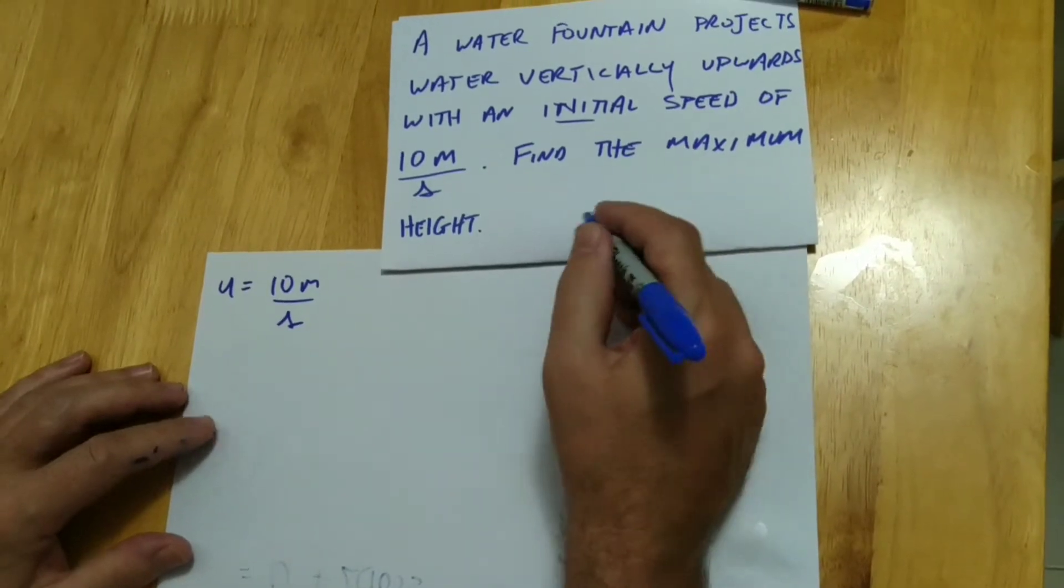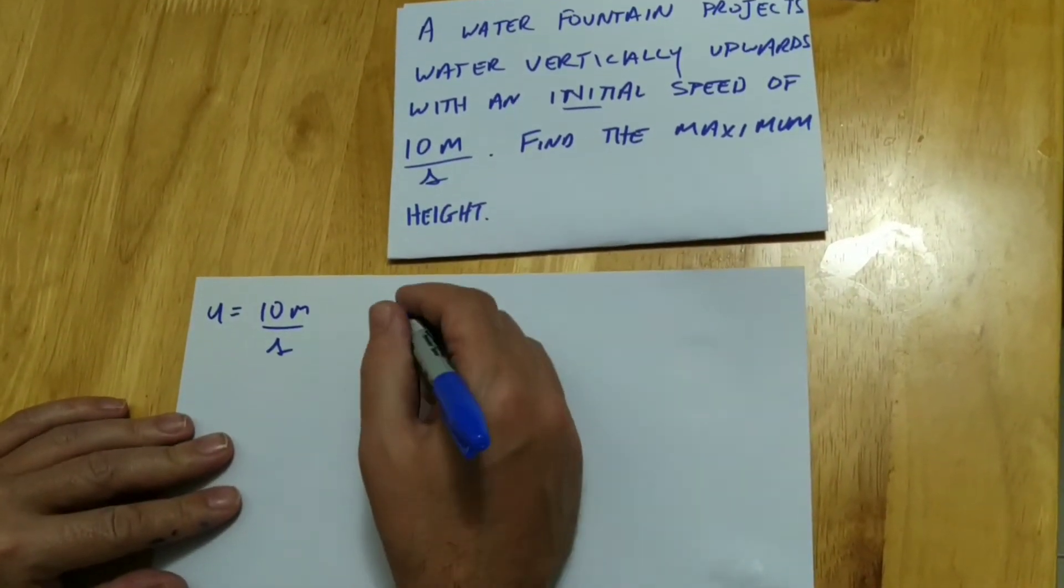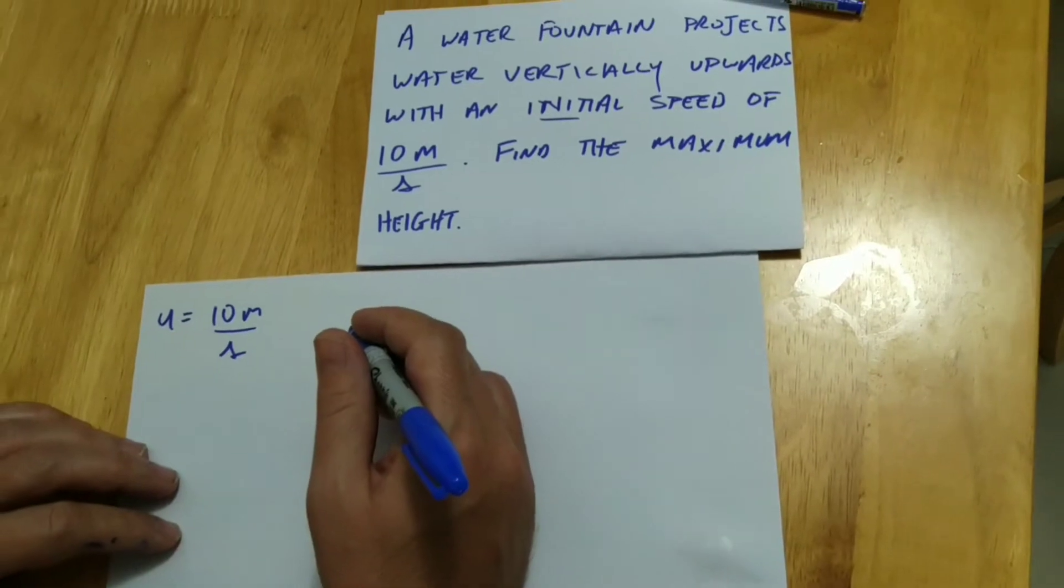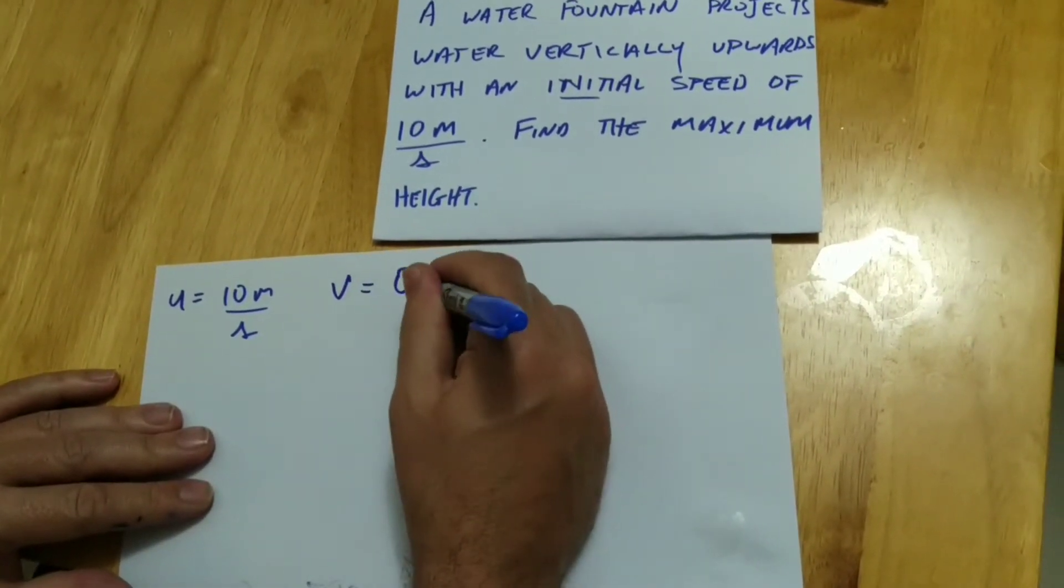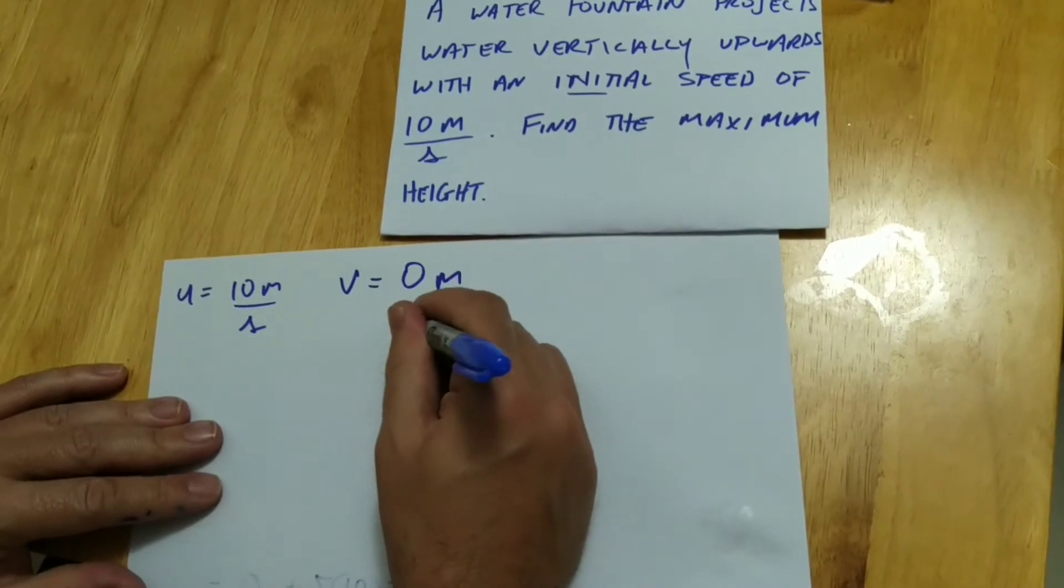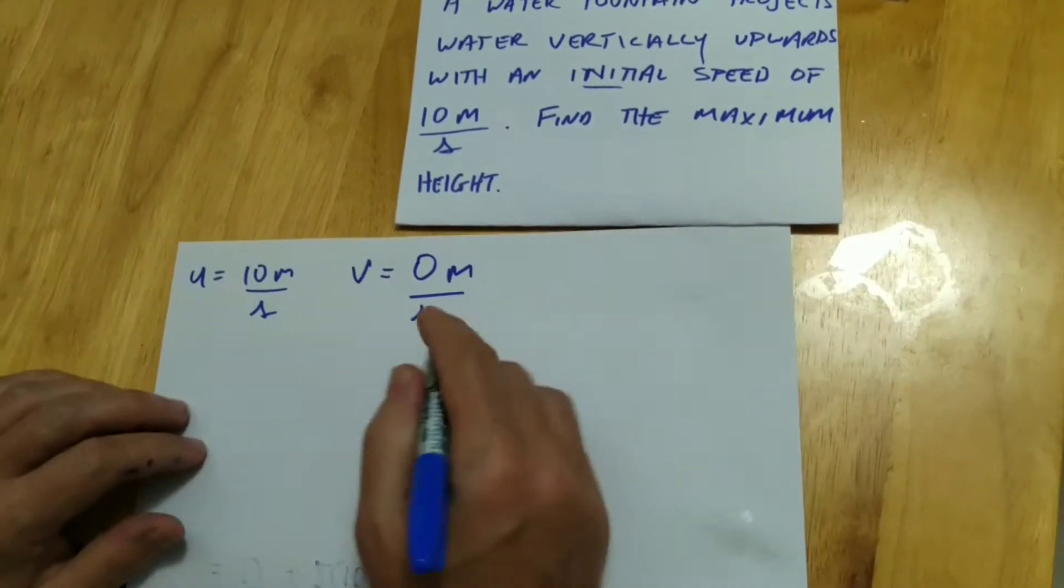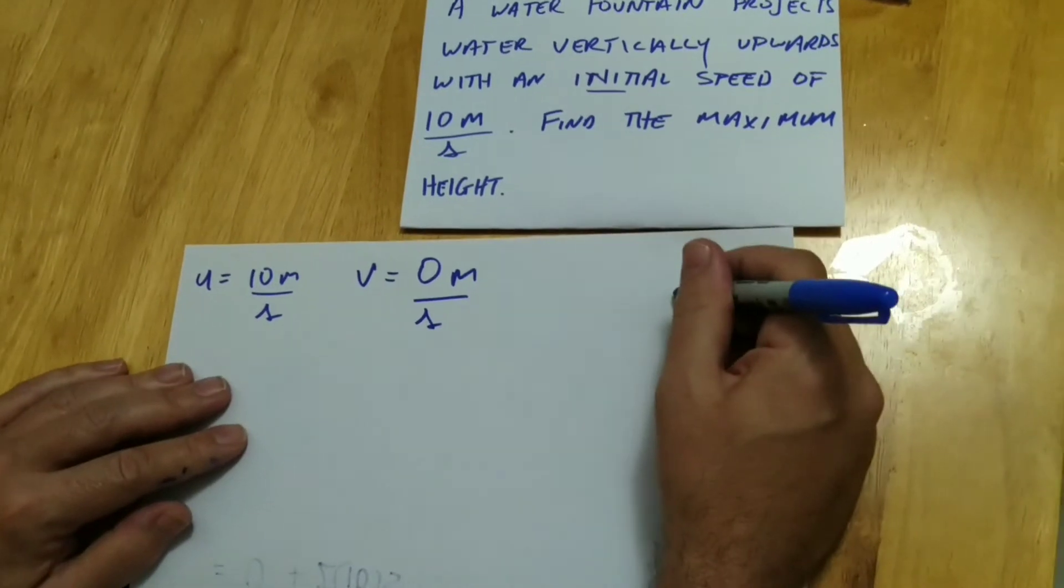And the maximum height means that V is going to be equal to zero. Because when it hits that maximum height, it's no longer going to be moving. So that's what they're asking. It's going to be a parabola.